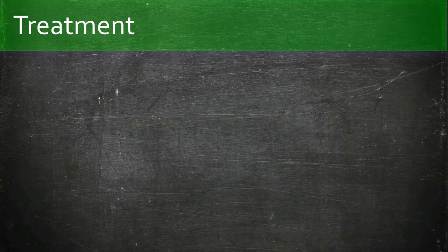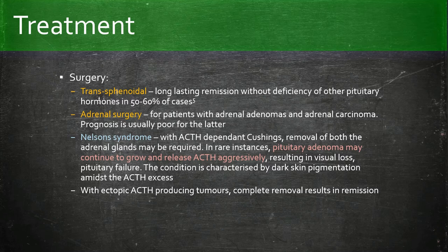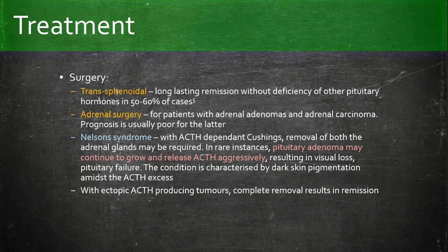The mainstay of treatment is surgery. Transsphenoidal surgery offers long-lasting remission in about 50–60% of cases. In patients who have adrenal adenomas or carcinomas these can be operated on, but prognosis is poor for carcinoma. With ACTH-dependent Cushing's, removal of both adrenal glands may be necessary. In rare instances, the pituitary adenoma may then continue to grow and release ACTH aggressively, resulting in visual loss, pituitary failure, and dark skin pigmentation — this condition is called Nelson's syndrome.